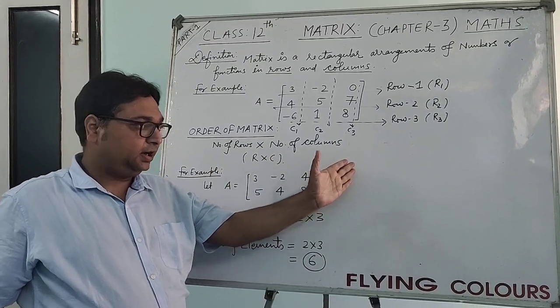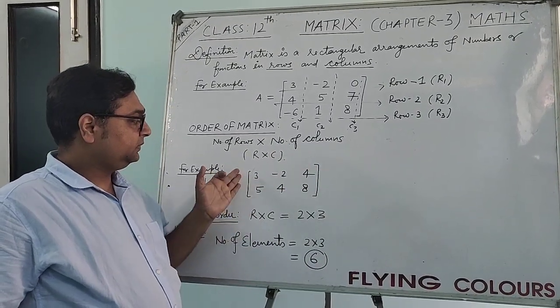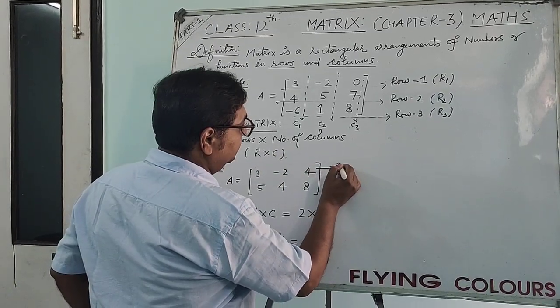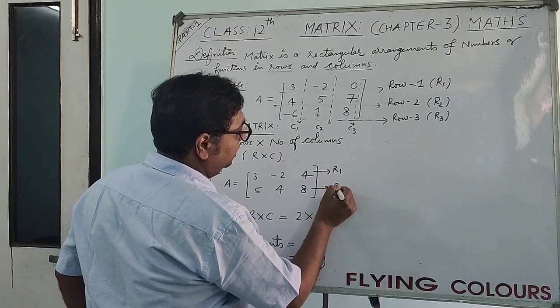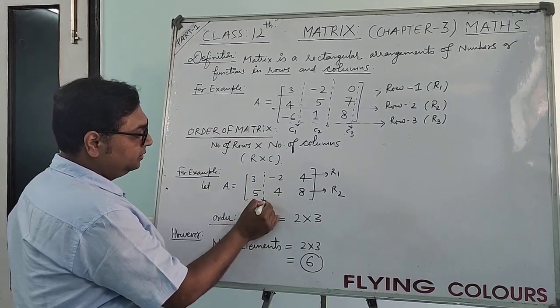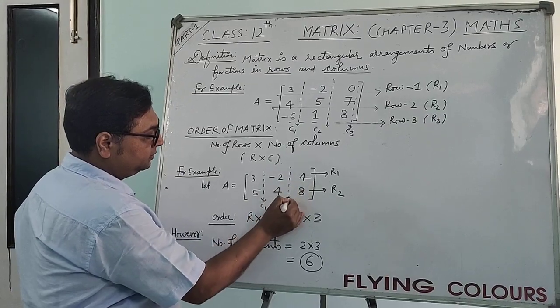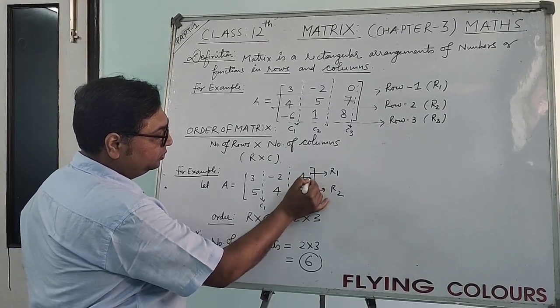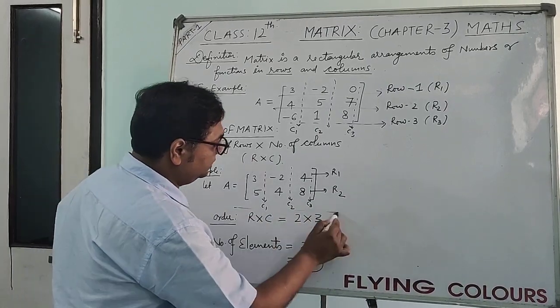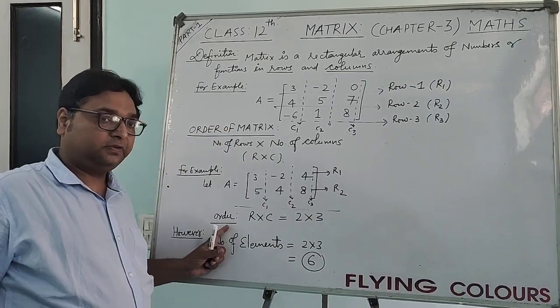So students, how many horizontal data are there? 1 and 2. That is called R1 and that is called R2. So how many rows are there? 2 rows. And how many columns are there? 1, 2 and 3. So how many columns are there? 3.